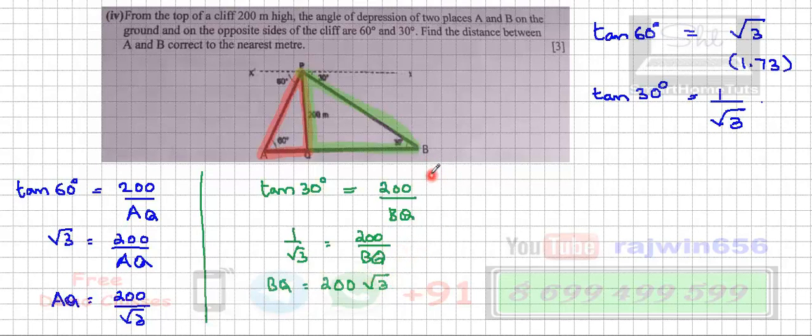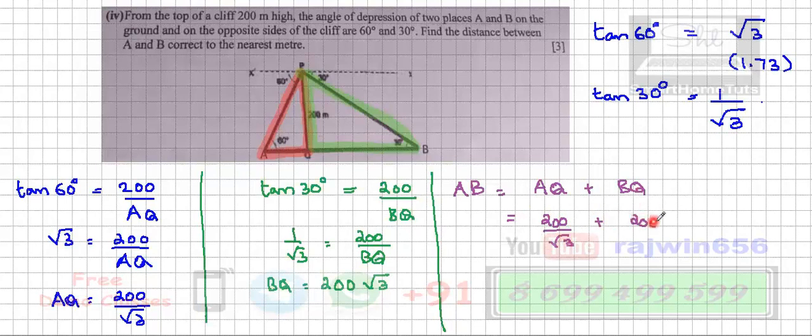Now we are supposed to find the value distance AB which is going to be AQ plus BQ. So AB is equal to AQ plus BQ, this is going to be equal to 200 upon root 3 plus 200 root 3.